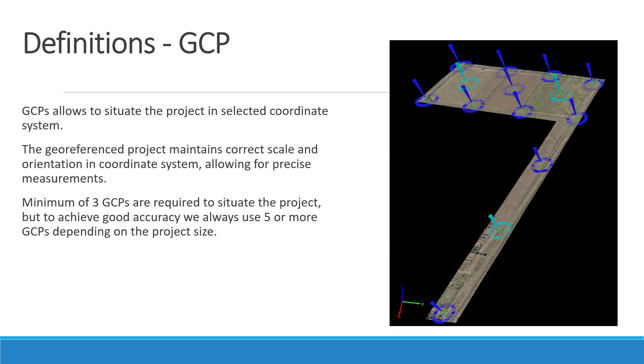A minimum of three GCPs are required to situate the project, but to achieve good accuracy we always use five or more GCPs depending on the project size.